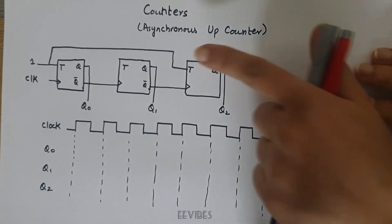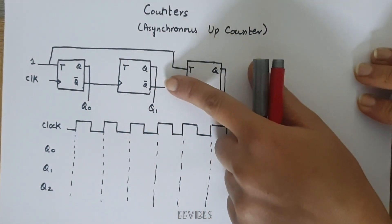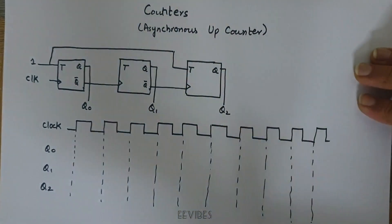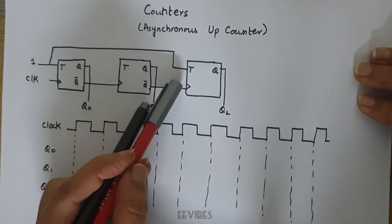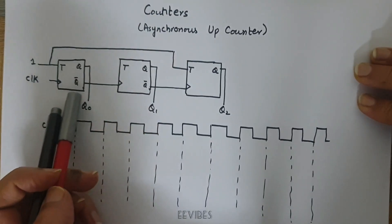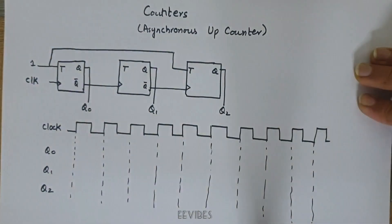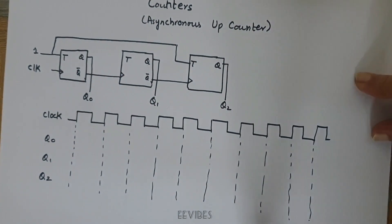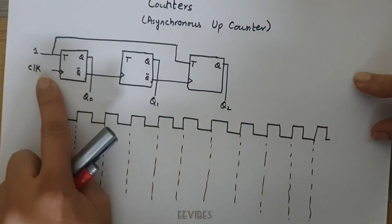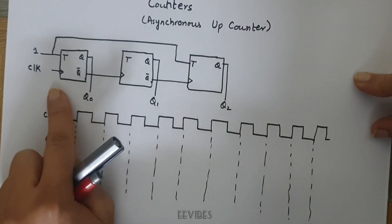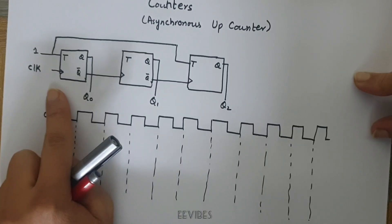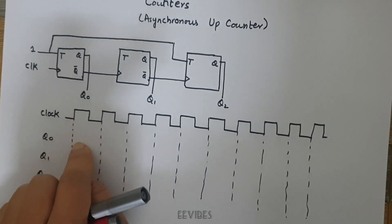Right now I will be discussing the asynchronous counters. I have designed an asynchronous counter using the T flip-flop. This counter will count up to seven, starting from zero to seven, counting the number of pulses being fed at the clock input. I have used three flip-flops because the toggle feature is naturally suited for the implementation of counting operations. A three-bit counter is capable of counting from zero to seven.